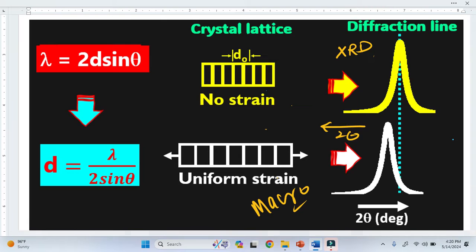What is macrostrain? Macrostrain means when there is a strain and the strain distributed uniformly throughout the material.